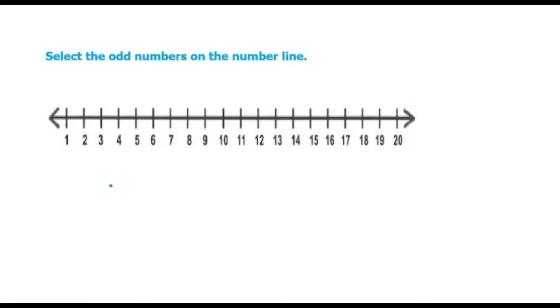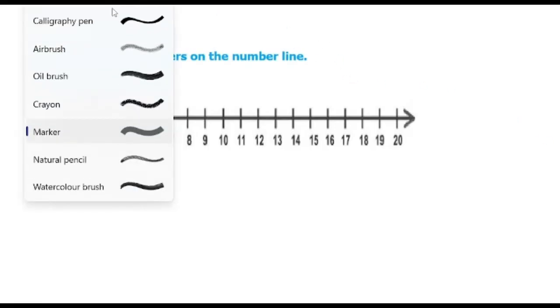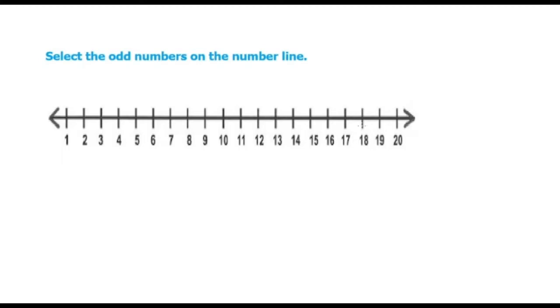And I wanted to remind you that odd numbers are numbers that end in 1, 3, 5, 7, or 9. So let's write that down. Odd end in 1, 3, 5, 7, or 9.